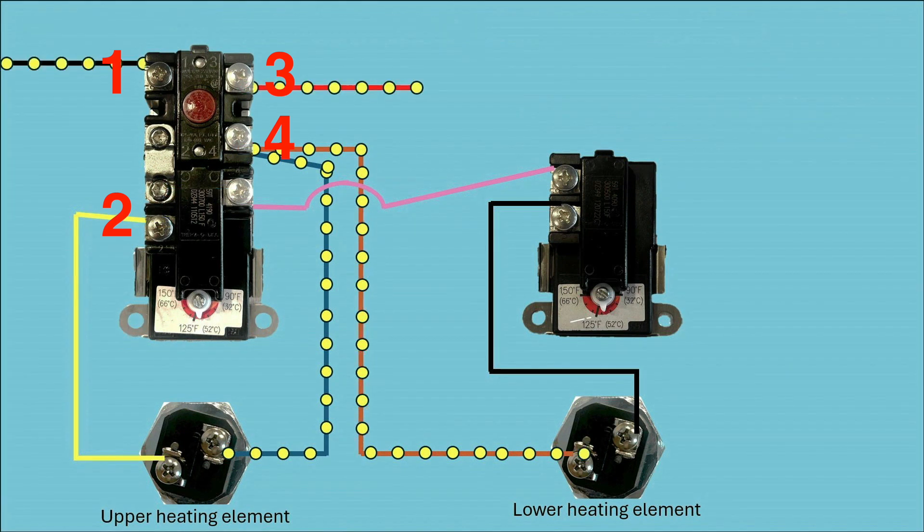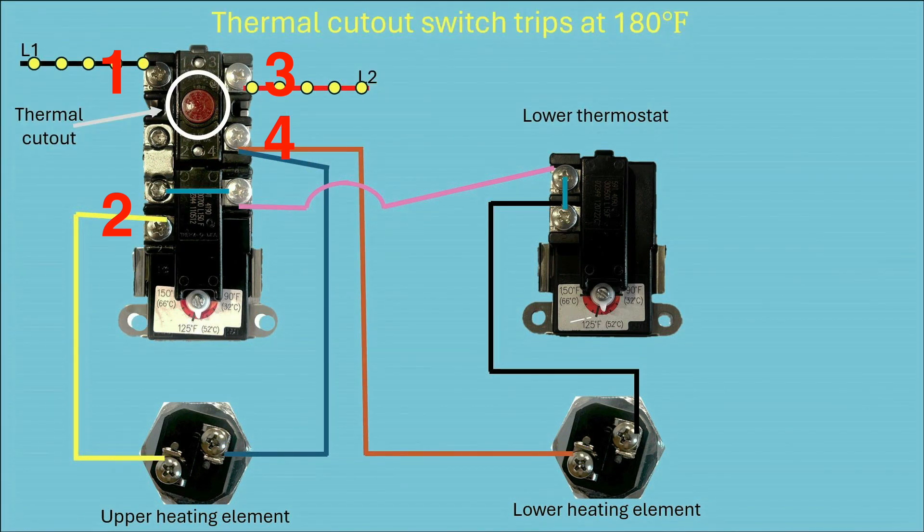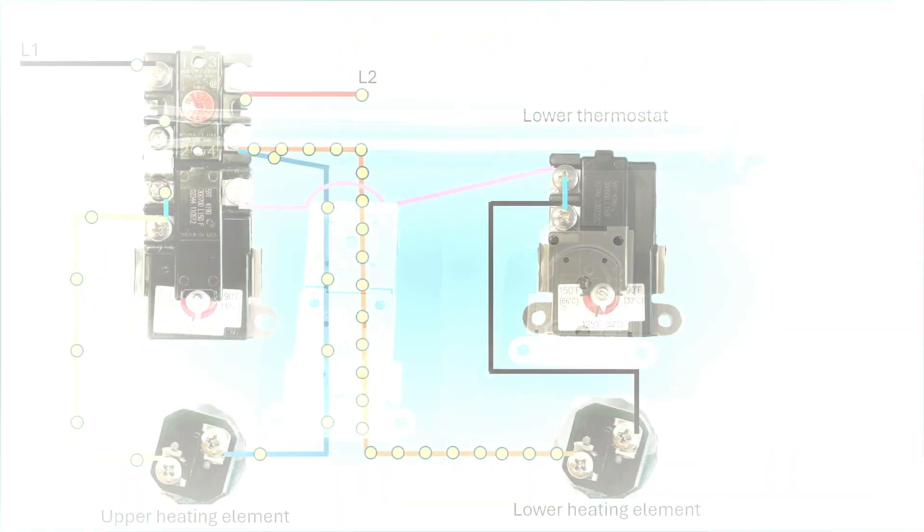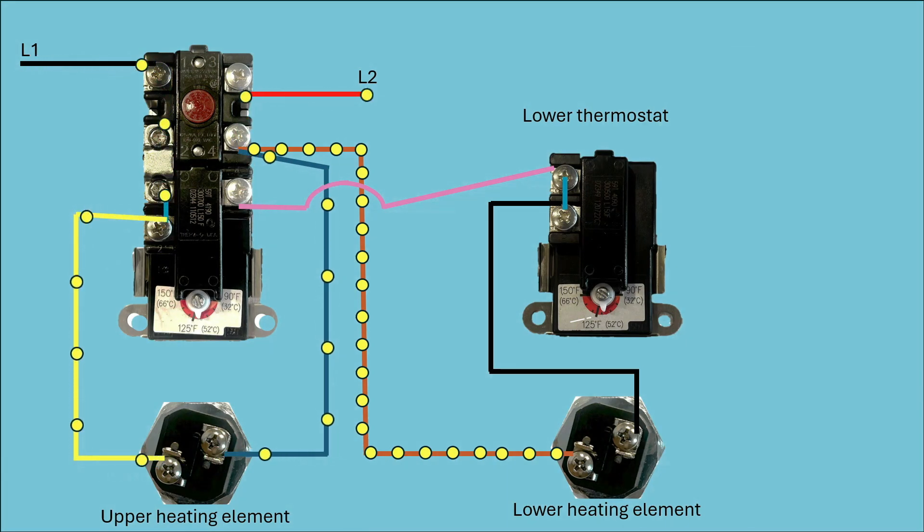Before we leave the animation, let's take one more look at that thermal cutout switch. So let's suppose that the water temperature gets too hot and that thermal cutout switch trips. As soon as it does, you now no longer have voltage on that brown wire or the blue wire. So there's no power at all to either of the heating elements. And that's how it stops the water from heating up any further. And that's the purpose of that thermal cutout. So that's how these thermostats and heating elements work together on these electric water heaters to control the water temperature.